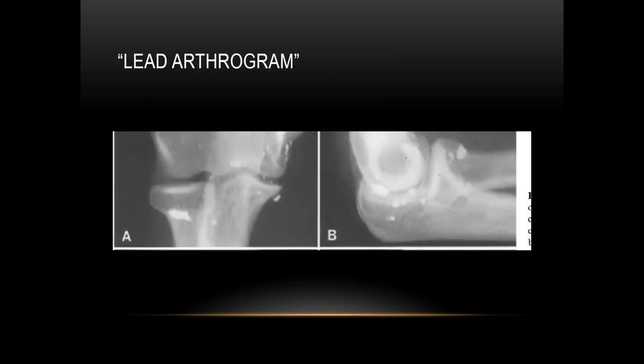Here is an example of a lead arthrogram — an x-ray of an elbow demonstrating hyperdense lead material around the joint space.